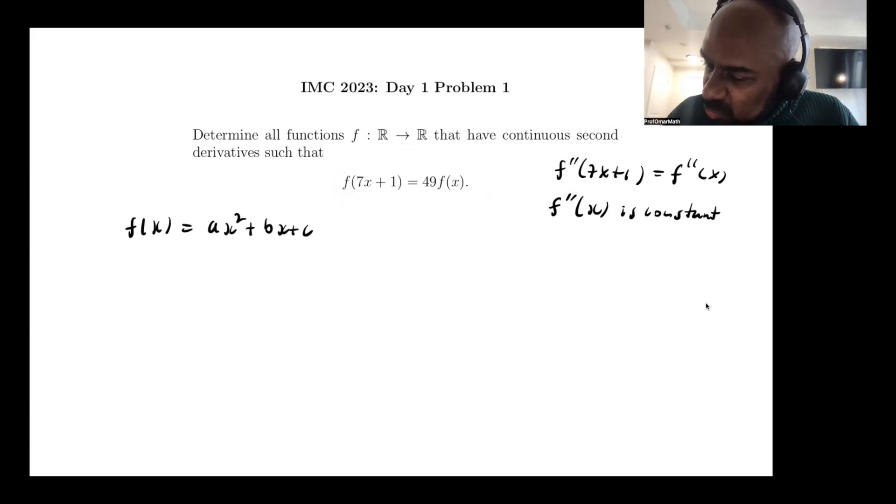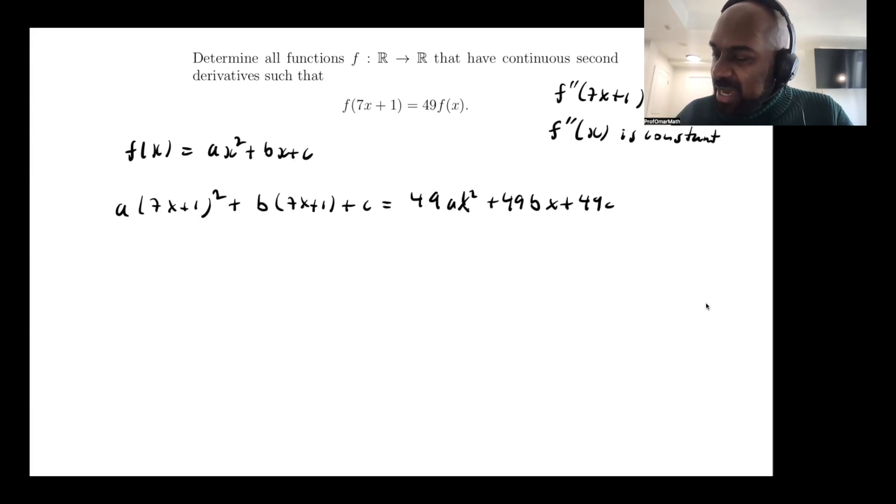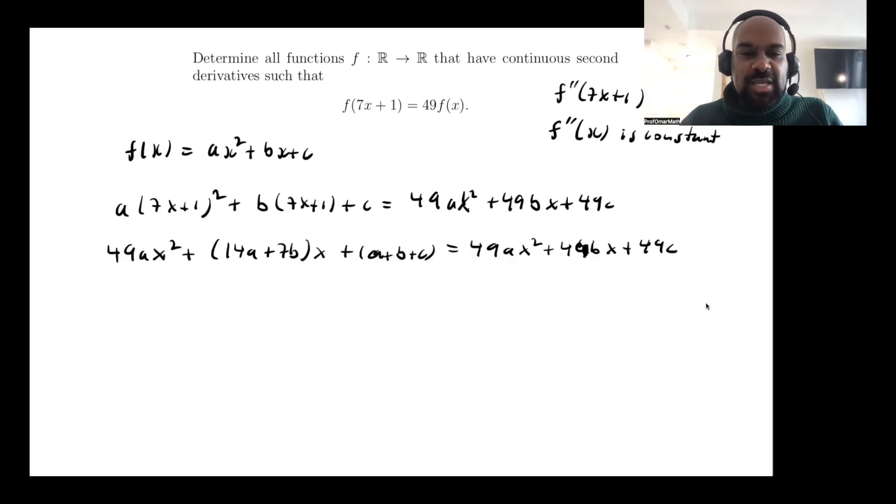All right, so f at 7x plus 1 looks like this, and then that has to equal 49ax² plus 49bx plus 49c. And so we'll have a system of equations in terms of these different variables that we have to solve. So if we do the expansion and collect terms, we should get 49ax² from here. We'll get a 14ax here, which gives us a 14a here, and a 7bx, which gives us a 7b right over here. And a constant term of a, b, and c all collected. And here the expansion is quite straightforward.